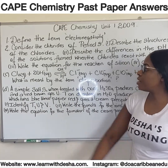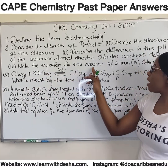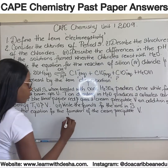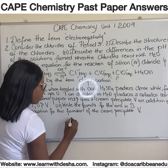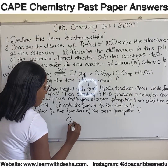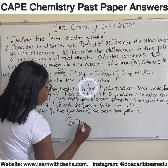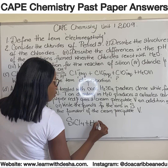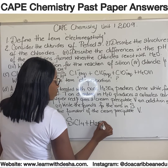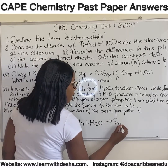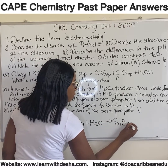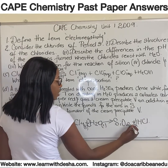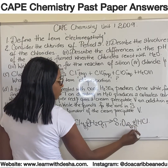Part three: write the equation for the reaction of silicon tetrachloride and water. SiCl4 plus H2O will give you silicon dioxide — which is a solid — and hydrochloric acid (liquid).